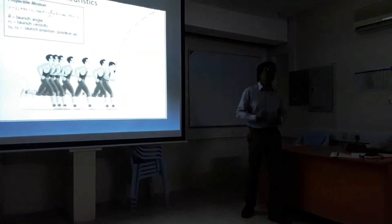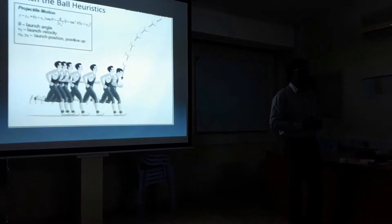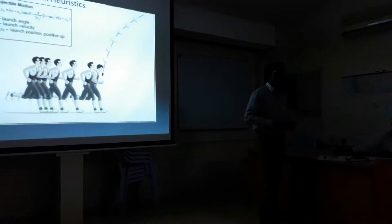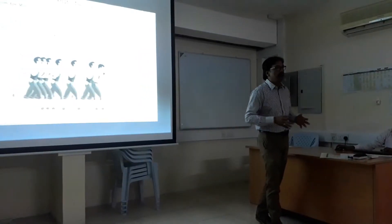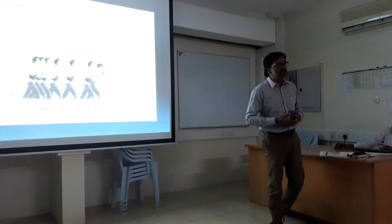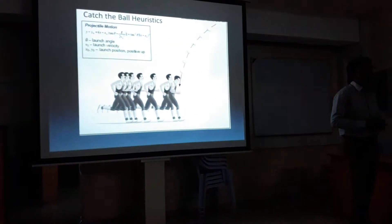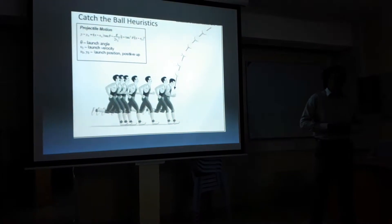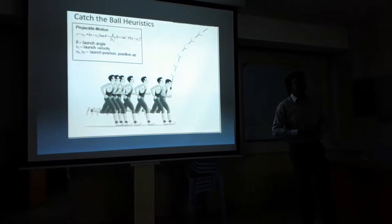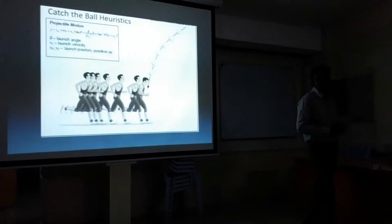This is a pictorial illustration. When we are trying to catch a ball, we are not trying to calculate using a projected motion formula. Our brain calculates the distance of the ball and we are able to catch it appropriately — or sometimes we may not catch it.